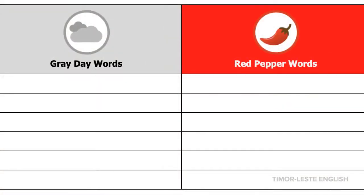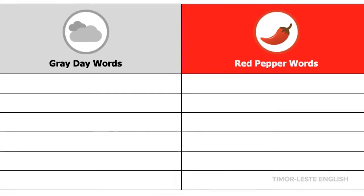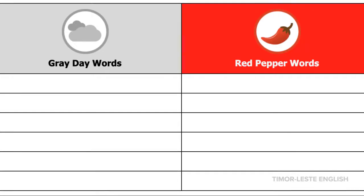Have the students make a table that looks like this in their notebooks. When they are ready, practice as a class the two color vowel sounds: gray day A, red pepper E. Gray day A, red pepper E.